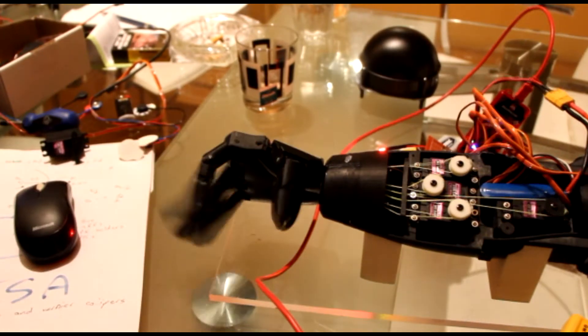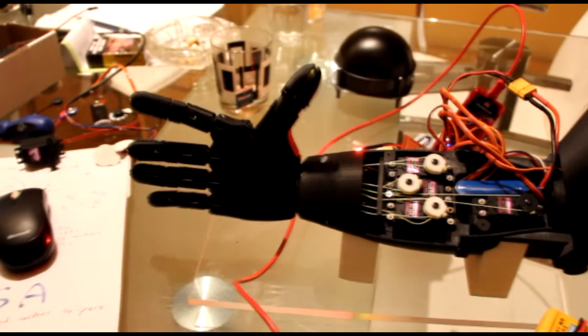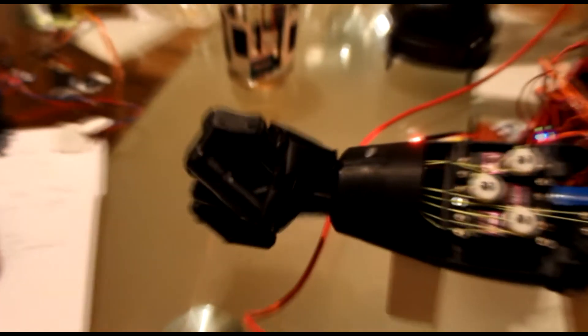And as you can see, each finger was actuated by a motor in the forearm. The wrist could rotate and the elbow could rotate, giving a total of seven degrees of freedom.